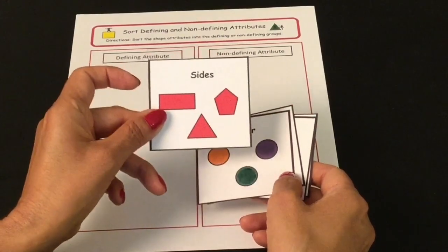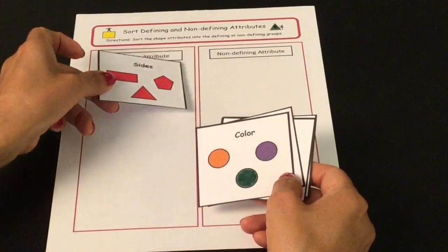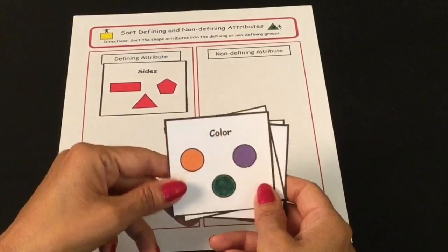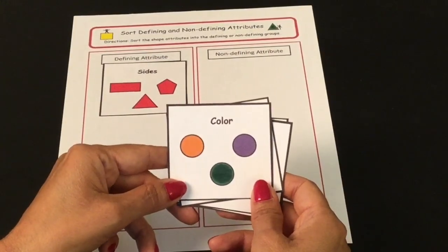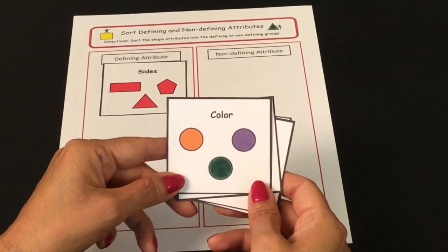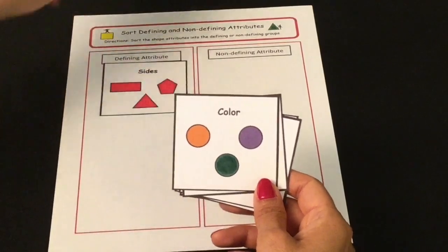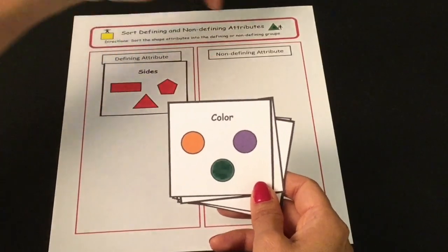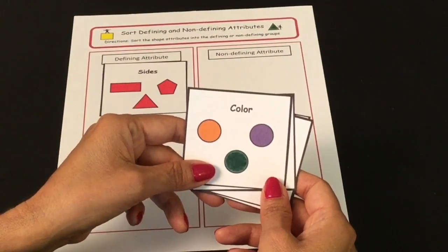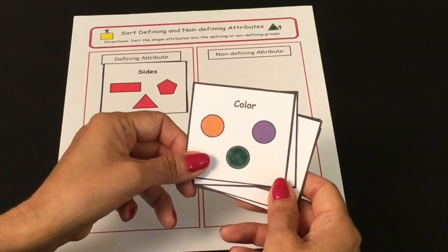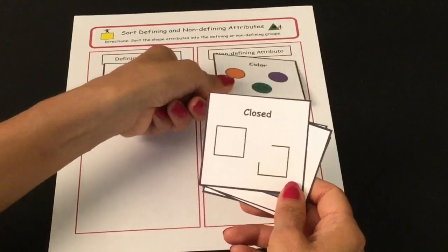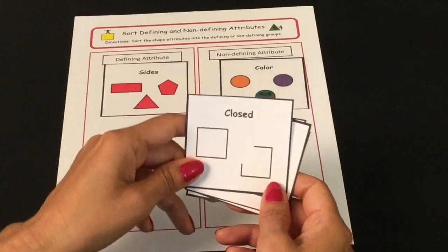The number of sides does matter, so it is a defining attribute. Here's the next one: color. Does the color of the shape matter? Is it a defining or a non-defining attribute? The color does not matter, so it is a non-defining attribute.